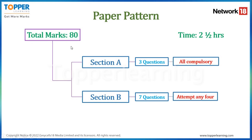Your paper is going to be of total 80 marks and you will be allotted two and a half hours to solve this paper. These 80 marks are further divided into two sections: Section A and Section B. Section A consists of three questions, all of which are compulsory. In Section B there are seven questions and you only need to attempt any four out of the seven.